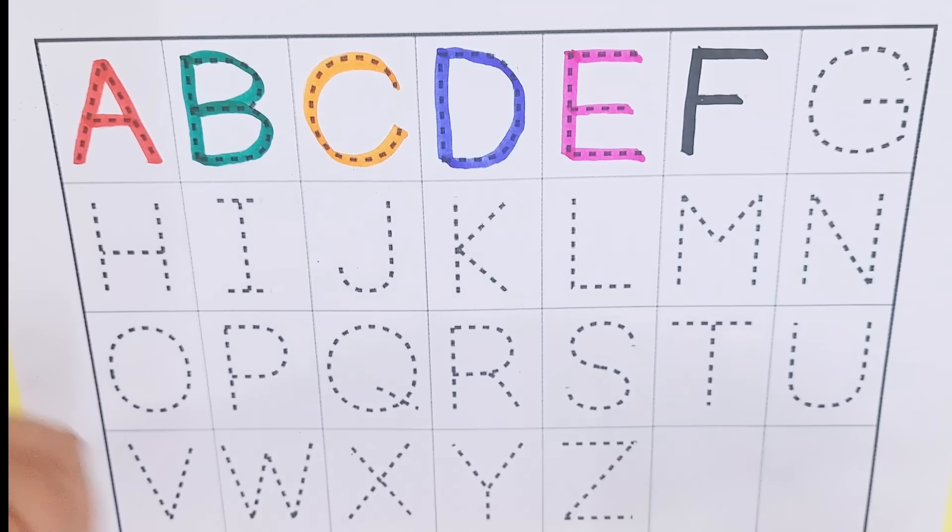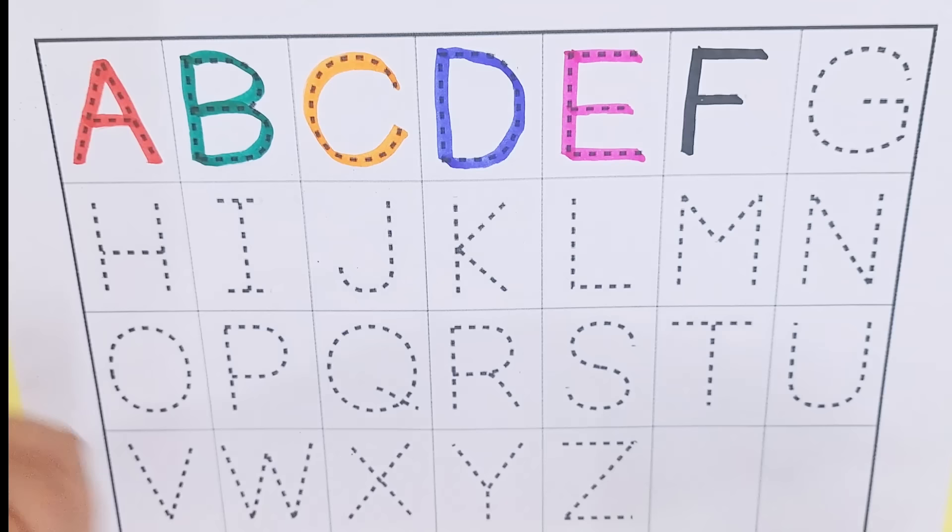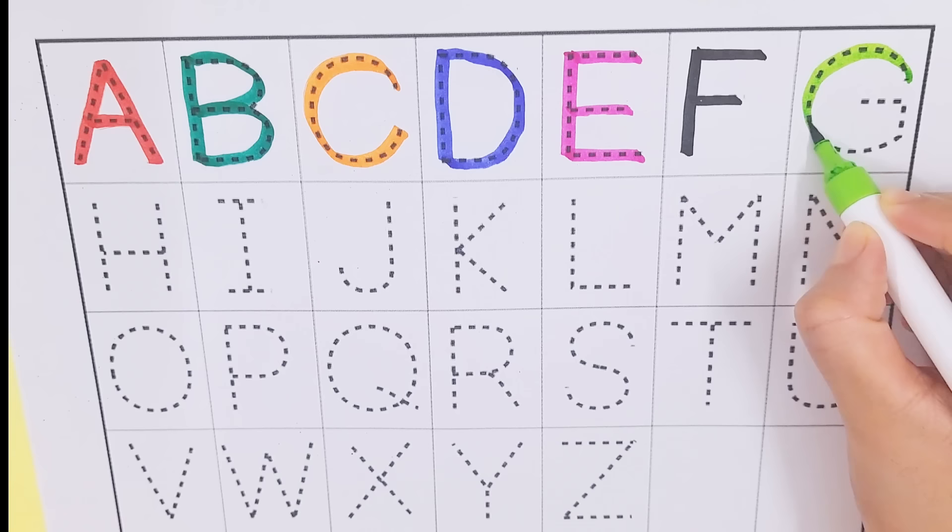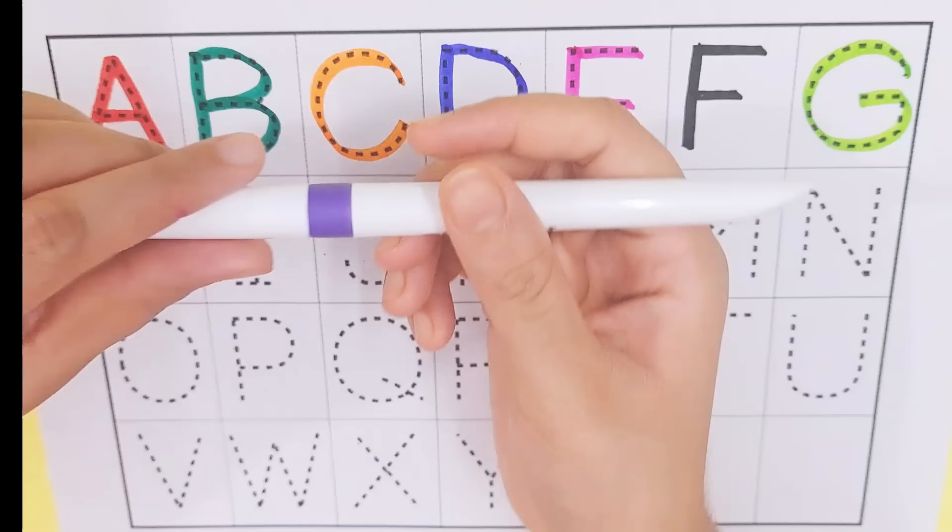Light green color, G, G for grapes. Violet color, H, H for horse.